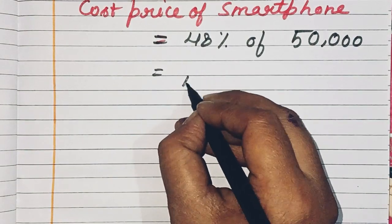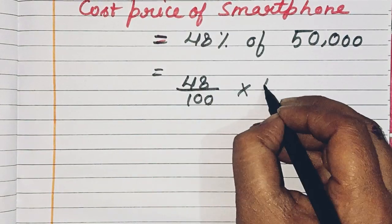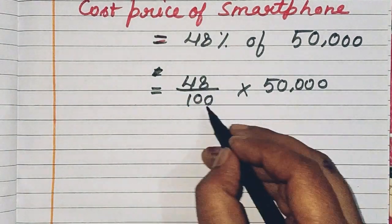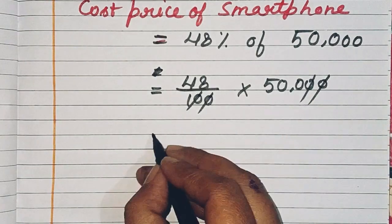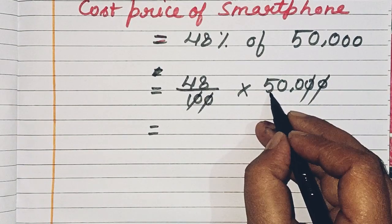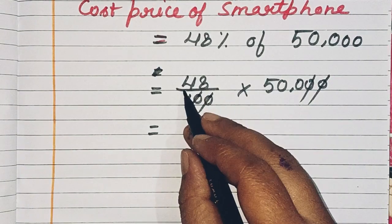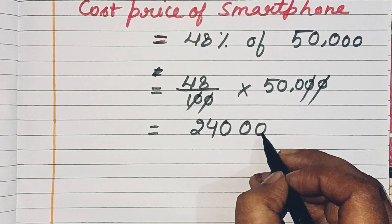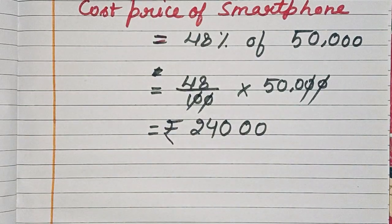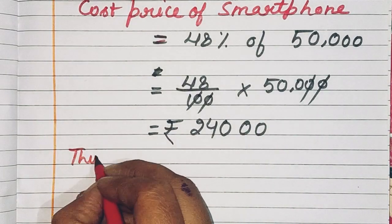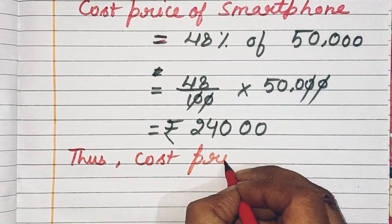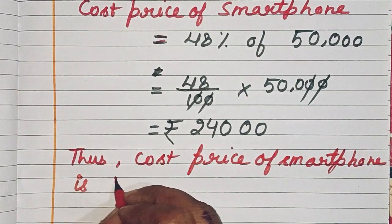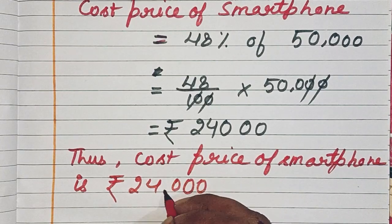48 upon 100 multiplied by 50,000. The two zeros from 50,000 and two zeros from 100 cancel out. Then multiply 48 × 5: 5 eights are 40, 5 fours are 20, plus 4 = 24. With the remaining two zeros, we get 24,000. Thus the cost price of the smartphone is Rs. 24,000.